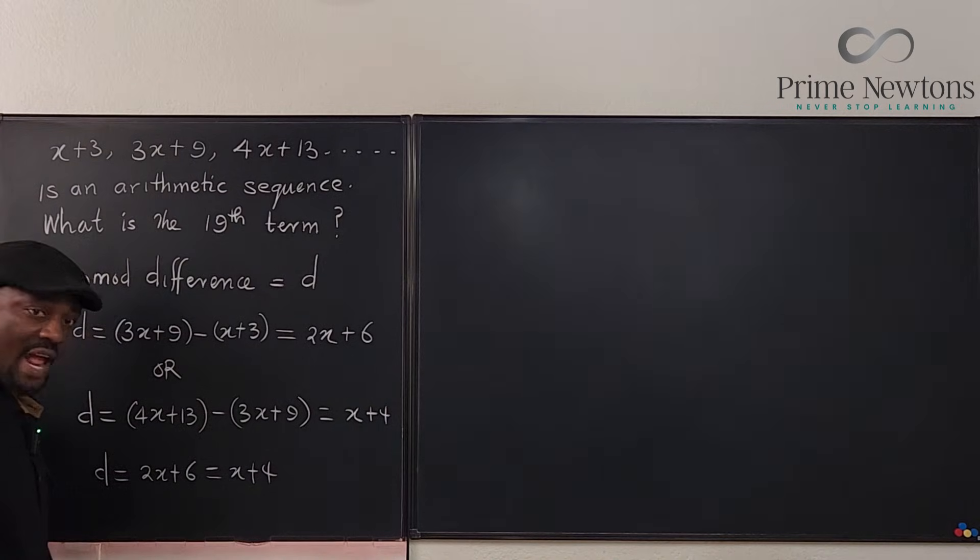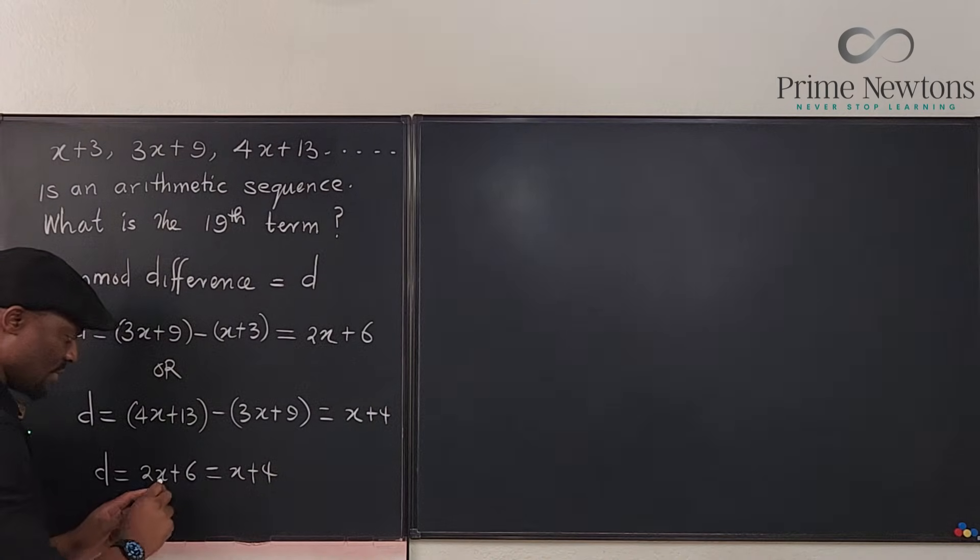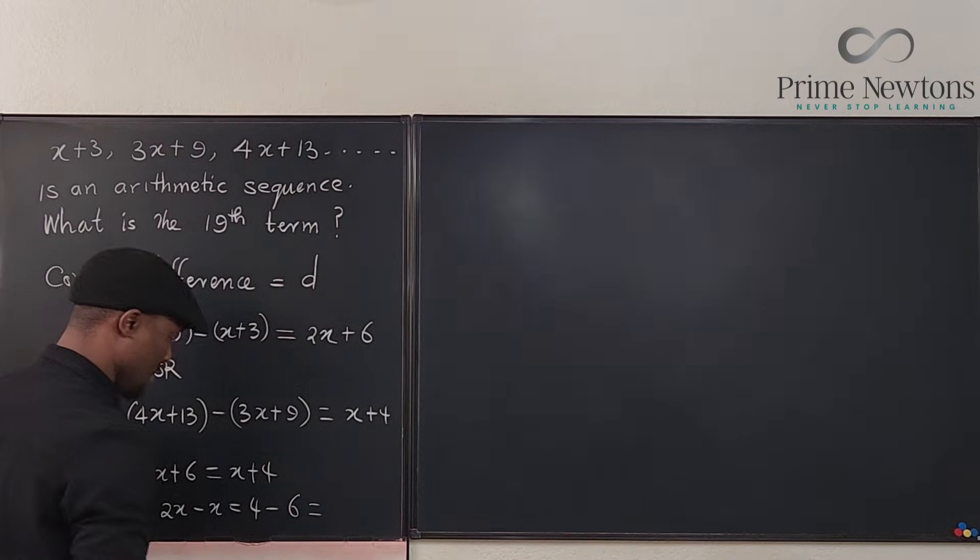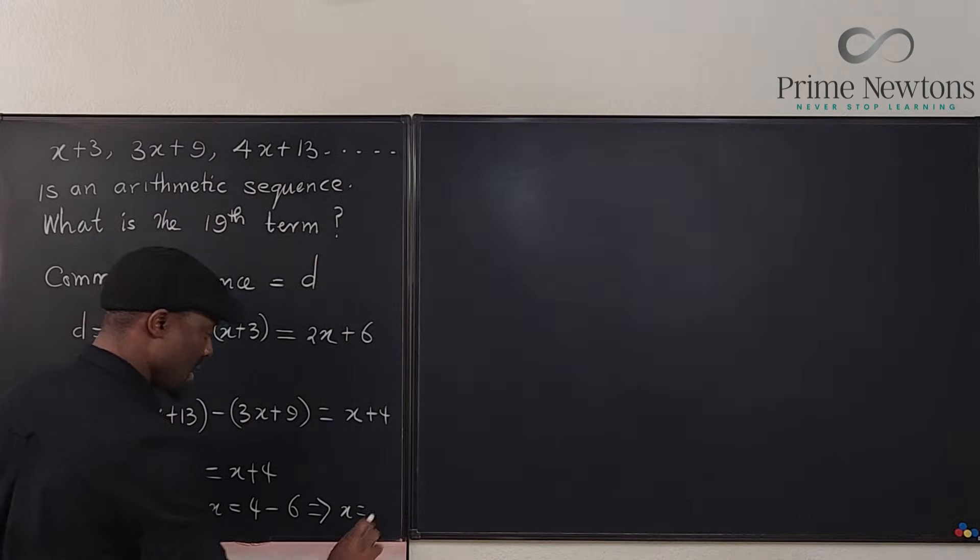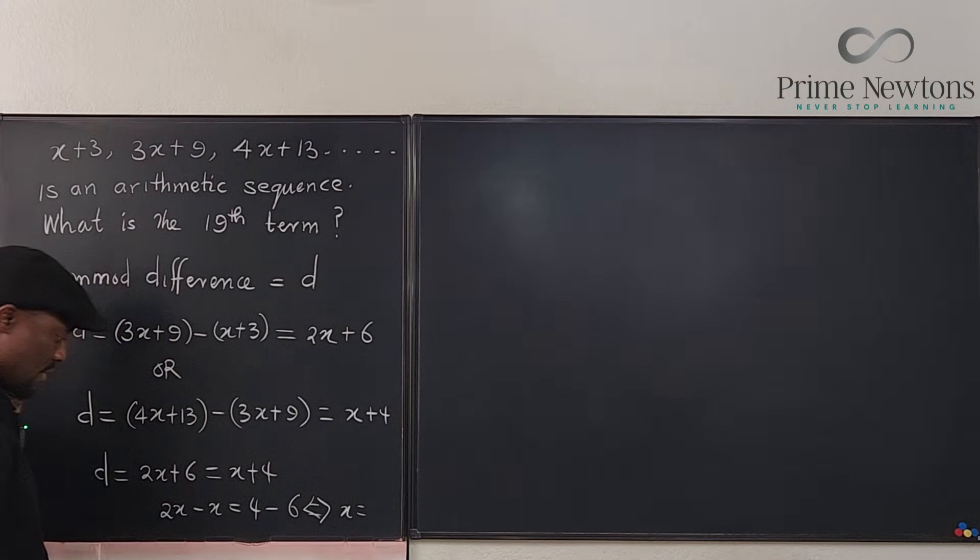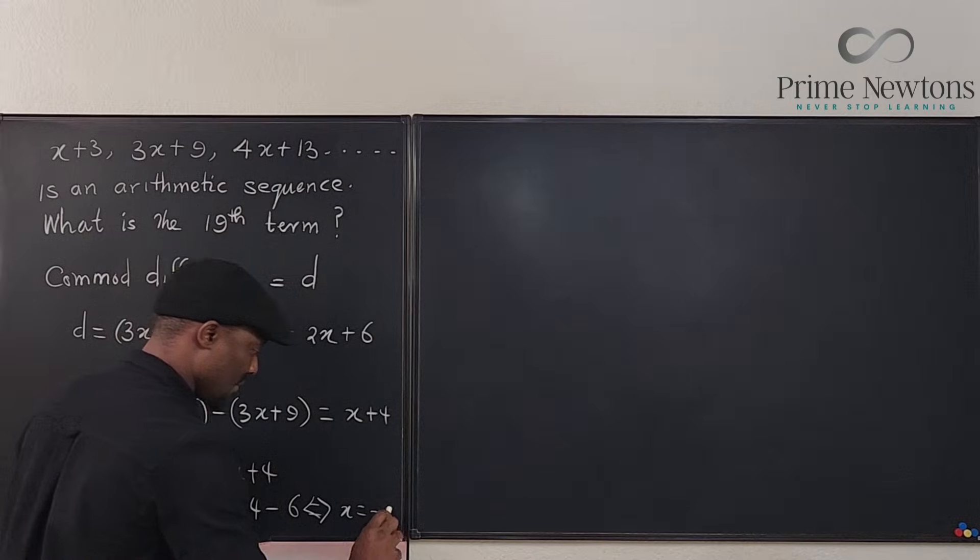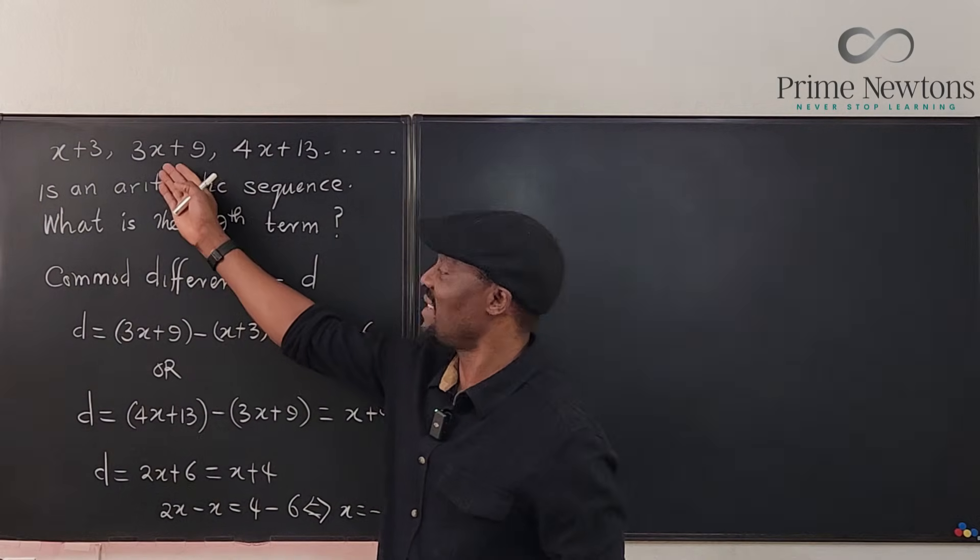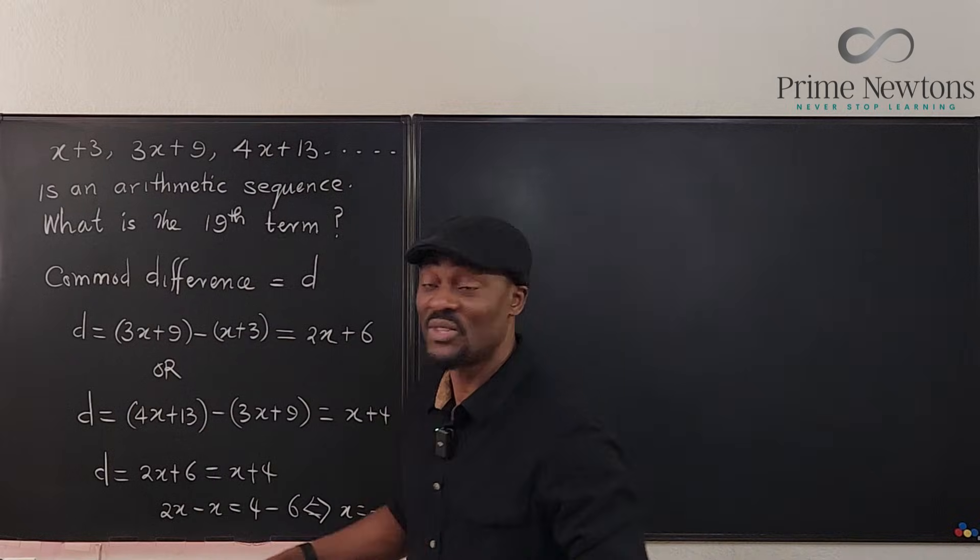So from here we can find an actual value for x. If you subtract this you get 2x minus x equals 4 minus 6, which implies x equals negative 2. So there's an actual value for negative 2. And you can go back here and see what the sequence actually is.